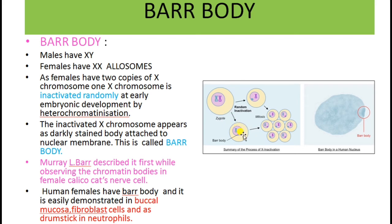The inactivated X chromosome appears as a darkly stained structure near the nuclear membrane. The pink colored structure near the nuclear membrane is known as a Barr body. This Barr body was first described by scientist Murray L. Barr while he was conducting experiments on chromatin bodies in female calico cat nerve cells. He found that the cat has blotches of black and orange color fur, and this is due to the inactivation of one of the X chromosomes in females. He called that inactivated X chromosome the Barr body.